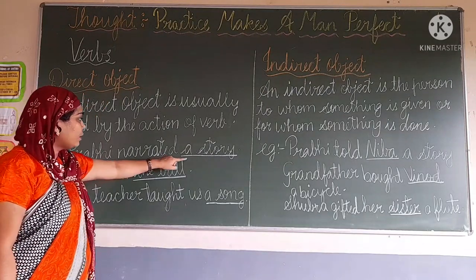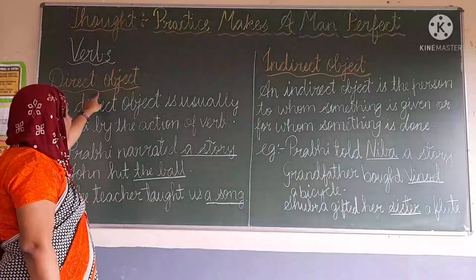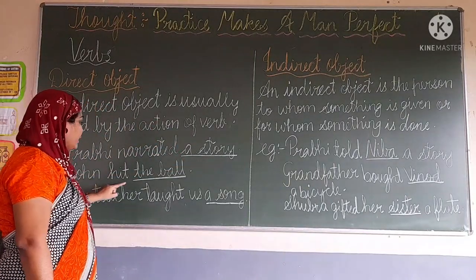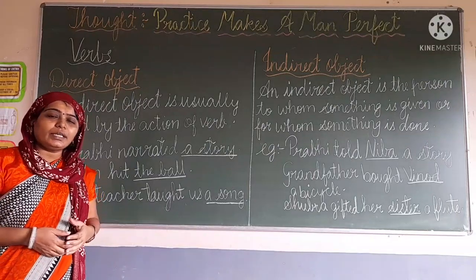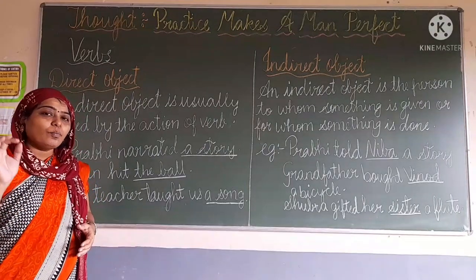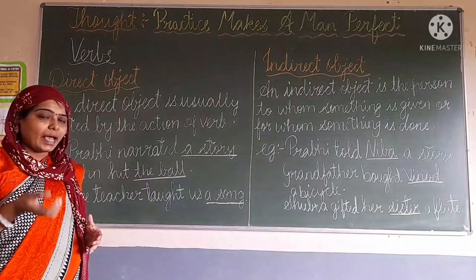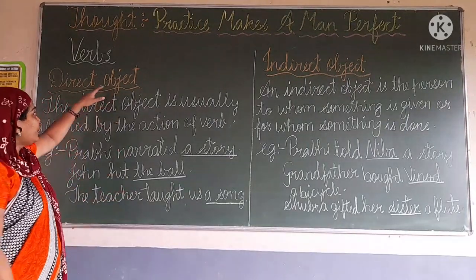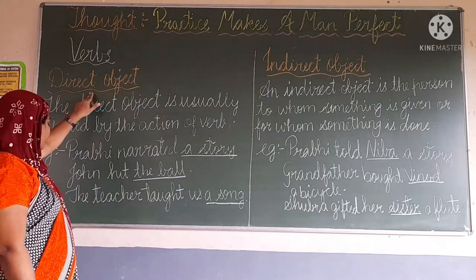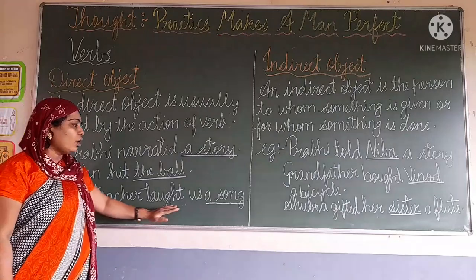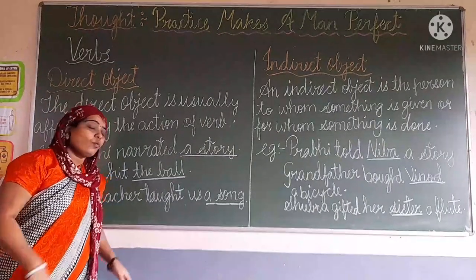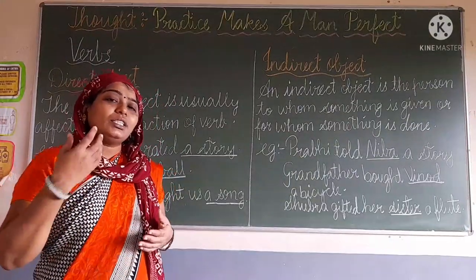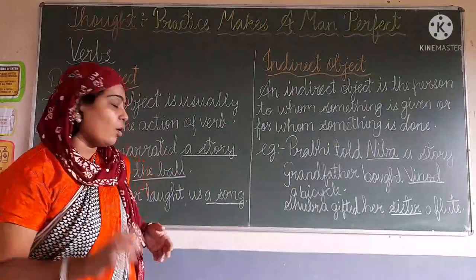Prabhupada narrated a story — 'a story' is the direct object. John hit the wall. What did John do? He hit the wall. The wall is the direct object because it is affected by the action of the verb. The teacher taught us a song. What did the teacher do? She taught a song.